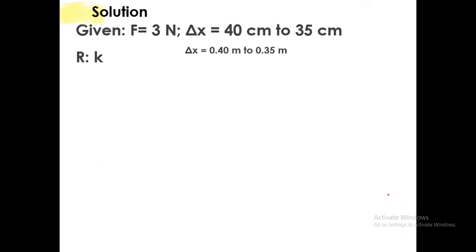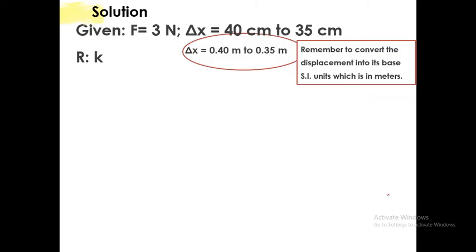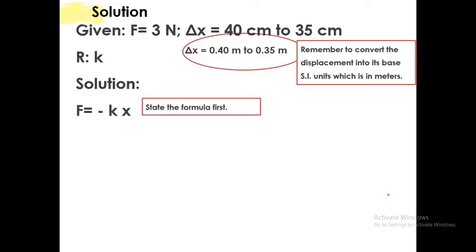Solution: Let us first convert our variables into their base SI units. 40 centimeters becomes 0.40 meters, because meters is the SI base unit for displacement. 35 centimeters becomes 0.35 meters. We will use Hooke's law. The first step is to always state the formula first. We use Hooke's law because you are given the force, you are given displacement, and you are required to solve for the spring constant. F equals negative k change in x. We will solve for the change in x. Change in x is the final position minus the initial position. Final is 0.35 minus initial 0.40, and you will get negative 0.05 meters.